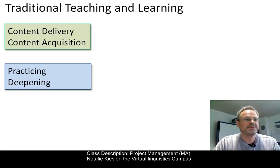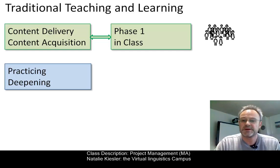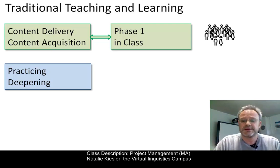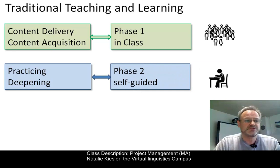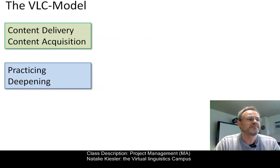In traditional teaching, content delivery and content acquisition are realized in class, where several dozens of students have to gather at the same time to be entertained by their teacher. In a second phase, students practice on their own, on the basis of additional exercise material, homework tasks, etc. We will flip or invert these two activities.